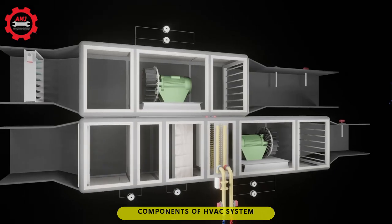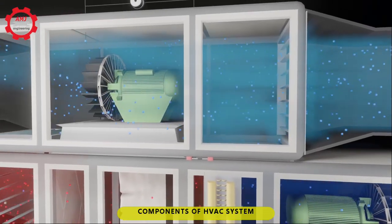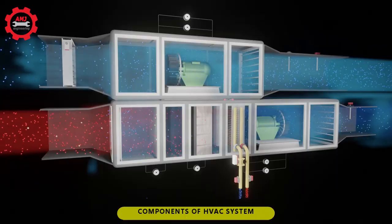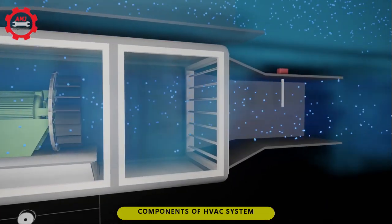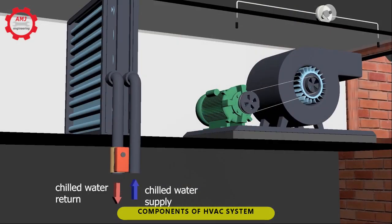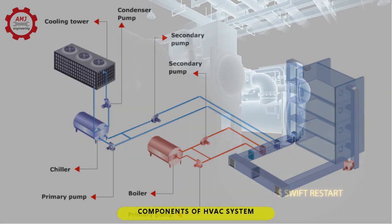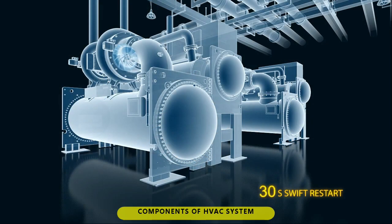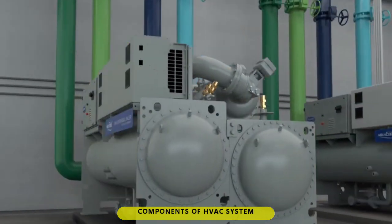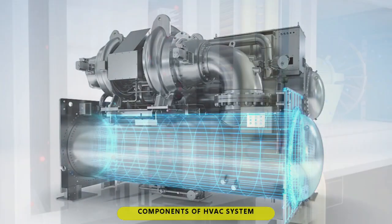4. Air handling unit (AHU): a large metal box containing various devices that purify air, regulate temperature and humidity, and supply conditioned air through air ducts. 5. Primary pump: transfers the water from the cooling coil to the chiller, or transfers the water from the heating coil to the boiler. 6. Chiller: a mechanism that cools water coming from the cooling coil of the AHU, then sends the water to the cooling tower, back to the chiller, and back to the cooling coil.